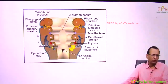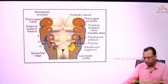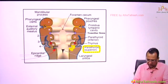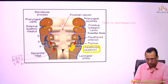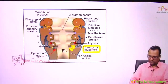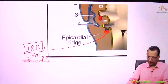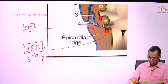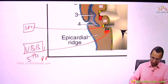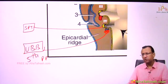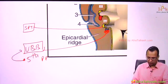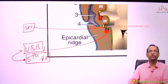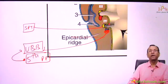Pouch 4 forms the superior parathyroid. But there is something else attaching here — the ultimobranchial body, which is a vestigial remnant of the fifth pharyngeal pouch. We do have a 5th pouch, but it is rudimentary. The ultimobranchial body, a remnant of the 5th pouch, attaches to the 4th pouch as the 5th pouch disappears.